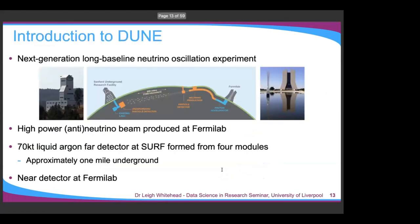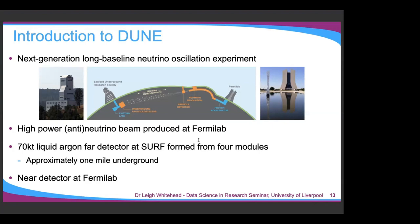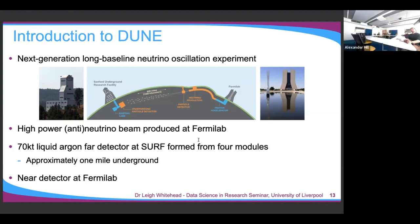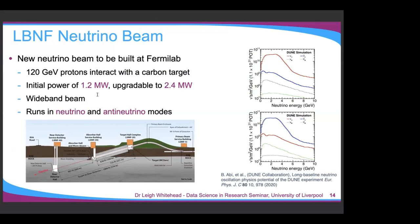Just quickly, a slide about types of interactions, as this will be useful later. We only measure the type of neutrino in charge-current events — the neutrino comes in, some interaction with the nucleus happens making hadrons, and we get a charged lepton out. For example, if it's a muon neutrino, we get a negatively charged muon we can identify. Whereas for neutral-current events, all neutrino flavors look the same because we get the outgoing neutrino instead, which we can't detect — we only have the hadronic system remaining.